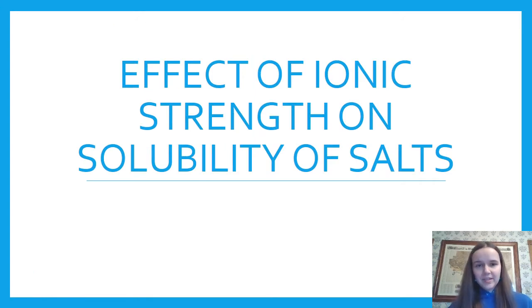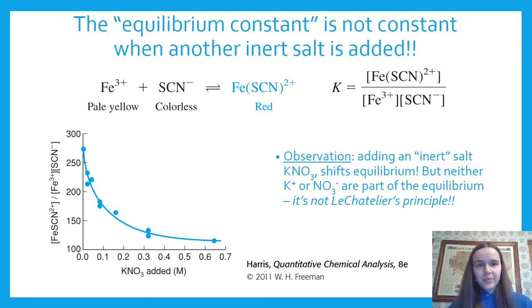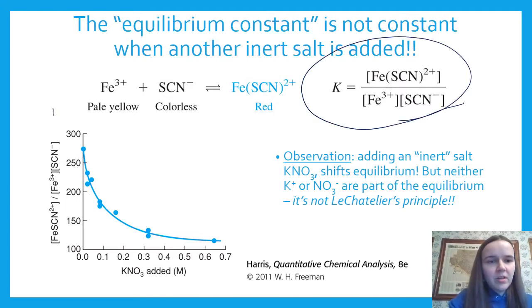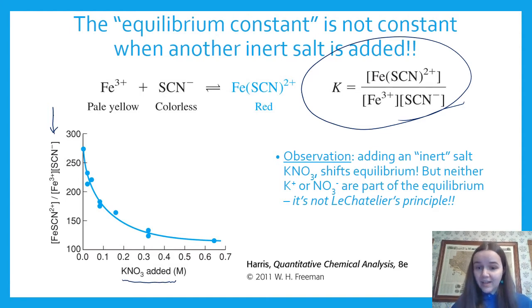How did we come to know about activity? First, let's talk about the effect that ionic strength has on how soluble salts are. We've studied equilibrium constants like Ksp. In this example, we have an equilibrium reaction between iron 3+, which is pale yellow, thiocyanate, which is colorless, and iron thiocyanate, which is red. If you plot the equilibrium constant on the y-axis versus how much inert salt potassium nitrate is present, you see that it's shifting the equilibrium.